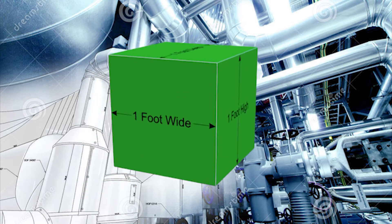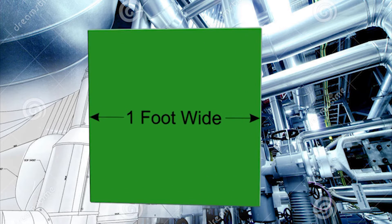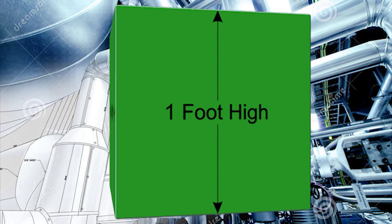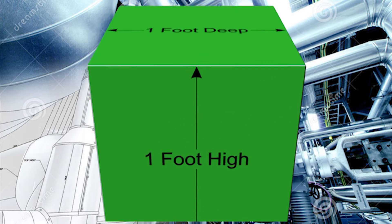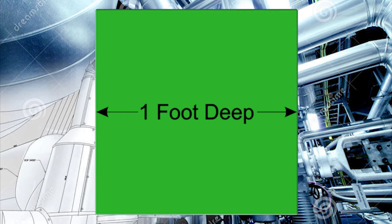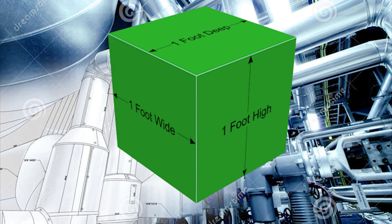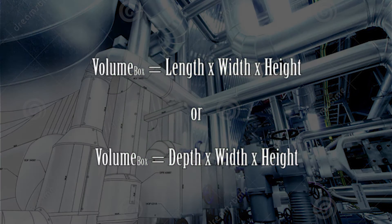First, let's build a simple virtual box. It'll be 1 foot wide by 1 foot high by 1 foot deep, and because all sides are equal we can call this a cube. So we have one cubic block. Now let's calculate the volume of this box. To calculate the volume of a box is a simple equation: length times width times height.